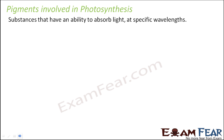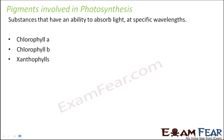Some examples of pigments involved in photosynthesis are chlorophyll A, chlorophyll B, xanthophylls, and carotenoids. You might be wondering that till now we thought there is only something called chlorophyll, but there is chlorophyll A and chlorophyll B as well — they are different because of the difference in their structures.